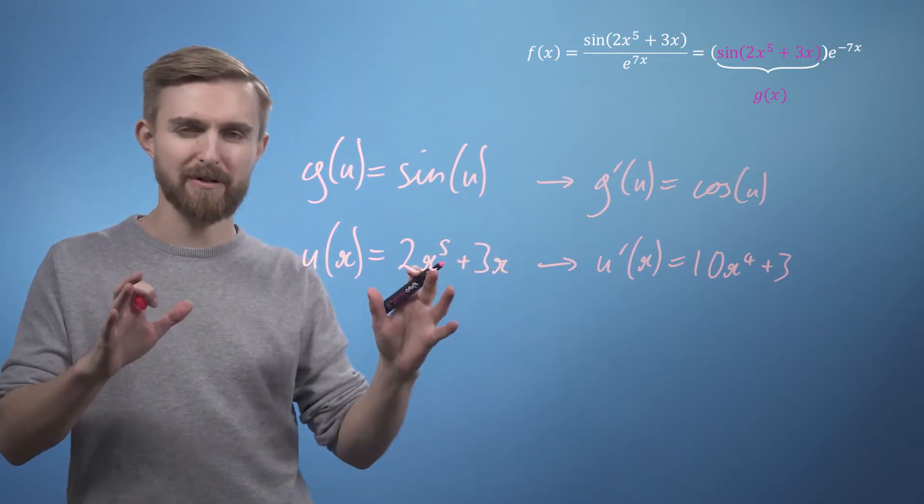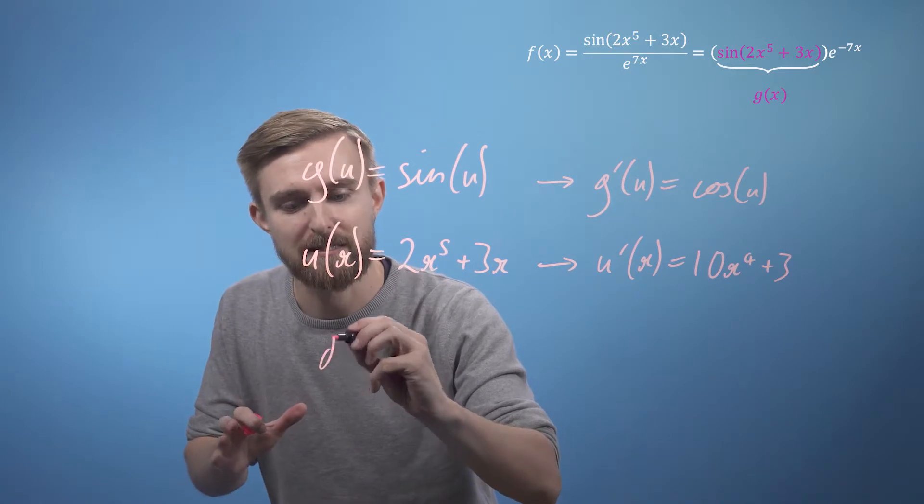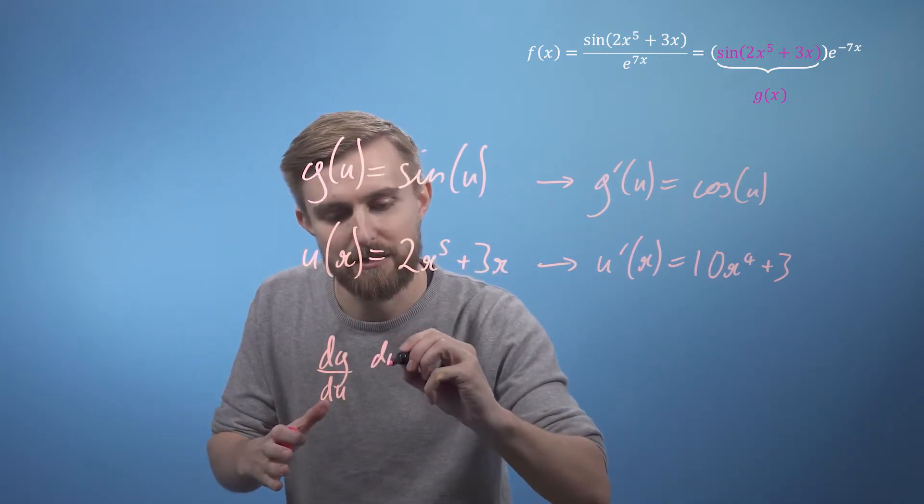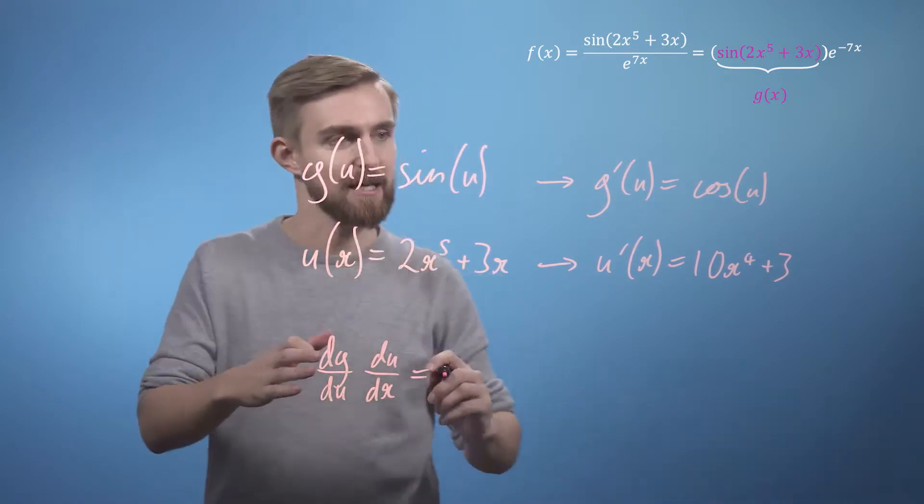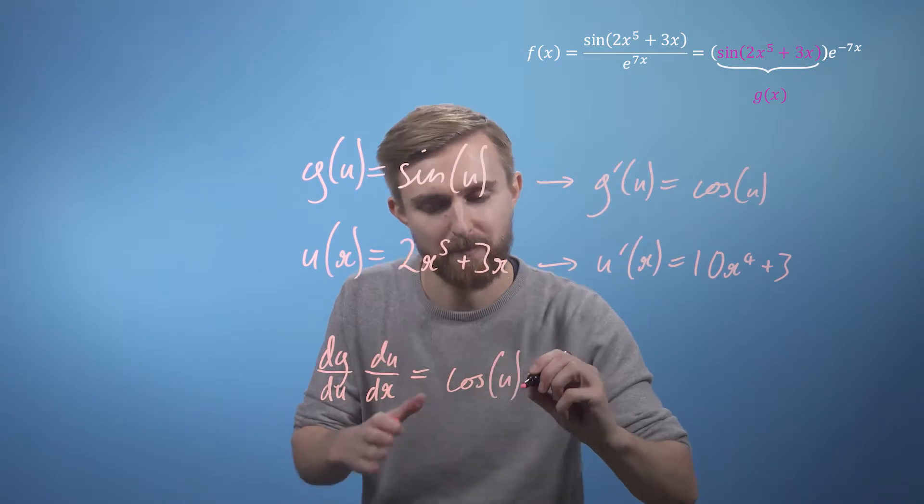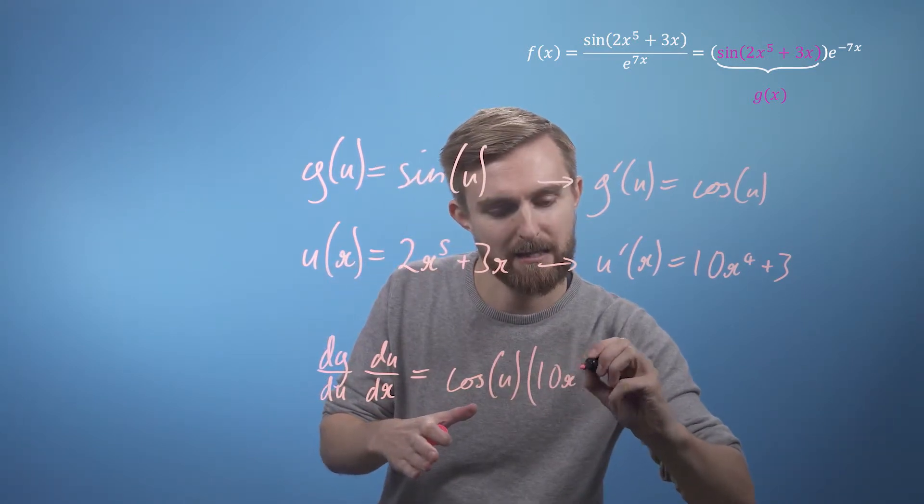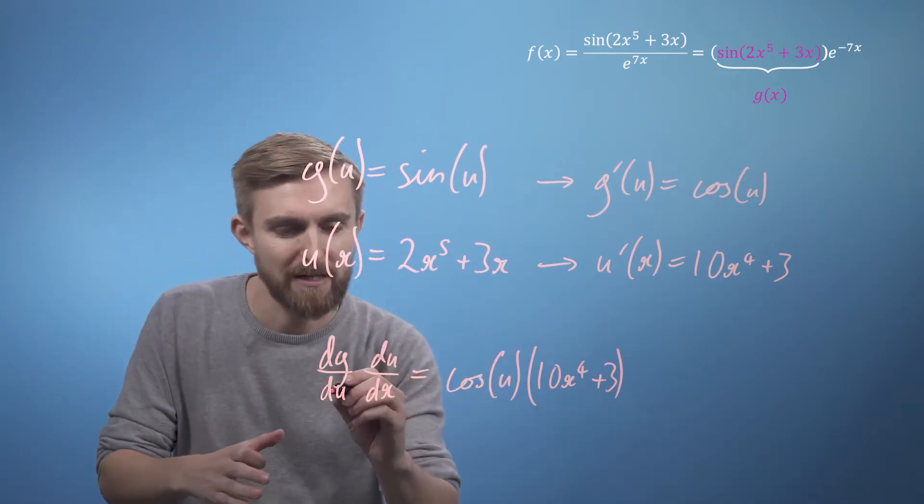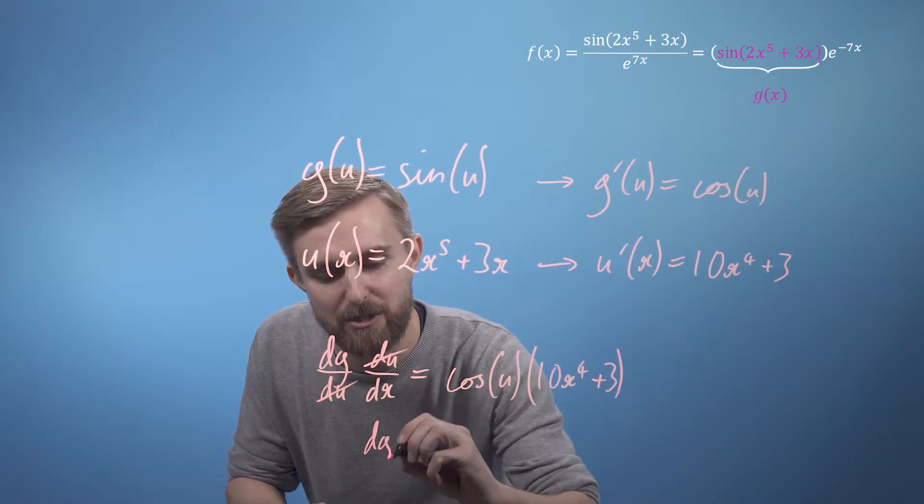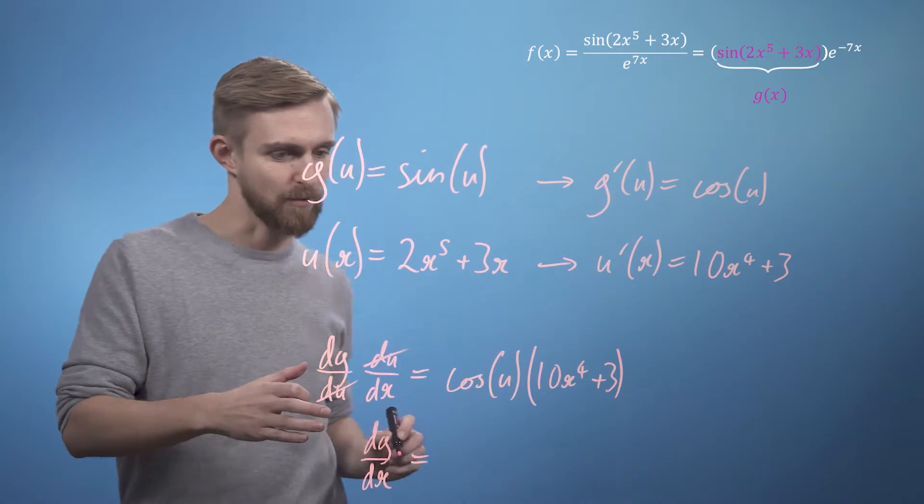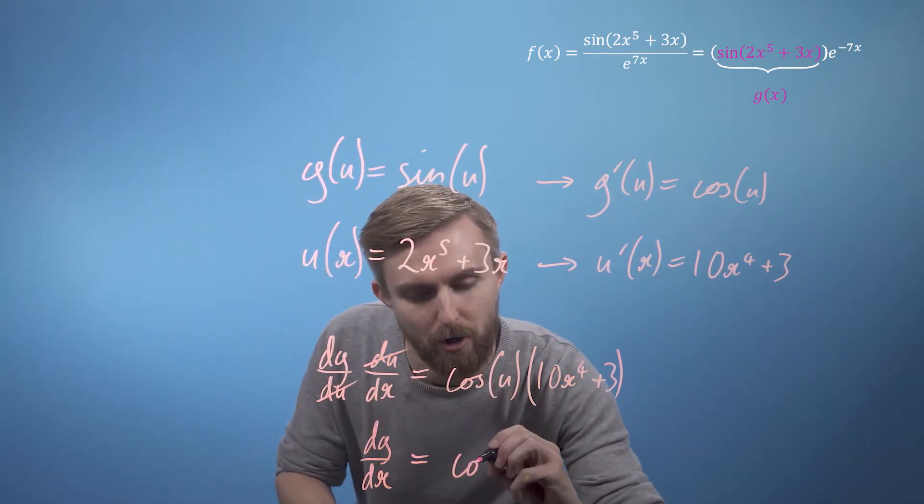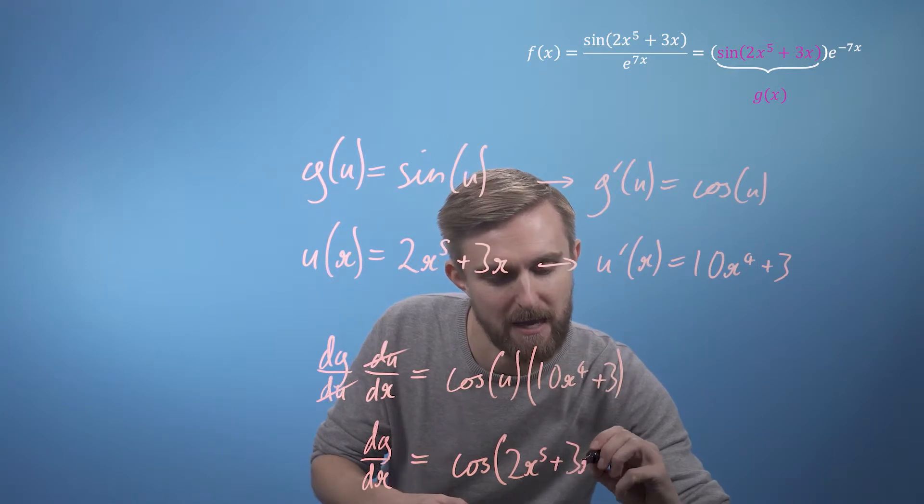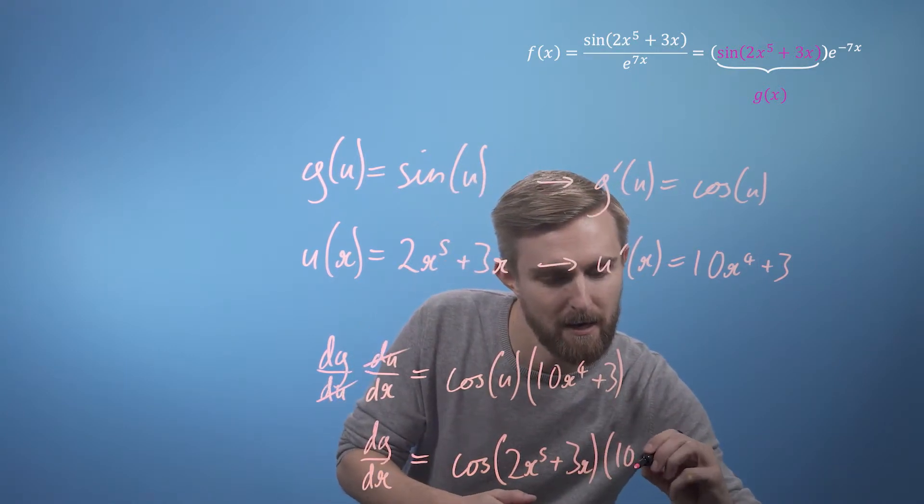Now we've got these two expressions and I'm going to use a mixed notation for convenience. So, well, dg by du multiplied by du by dx is going to give us cos of u multiplied by 10x to the power of 4 plus 3. And now we're going to want to have a final expression that doesn't include a u. So we can think about these two canceling each other out and we get dg by dx, and this just equals cos of u, which is just 2x to the power of 5 plus 3x, multiplied by 10x to the power of 4 plus 3.